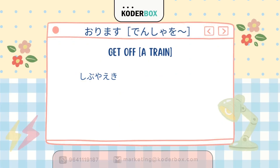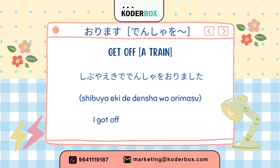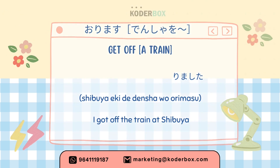Second: get off a train — orimasu. Densha o orimasu. Shibuya eki de densha o orimasu — I got off the train at Shibuya.